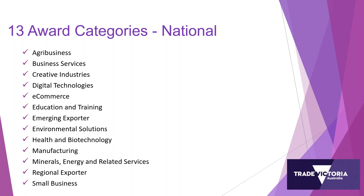If you are in a sectoral category such as agribusiness or education and training, you may also want to consider one of the crosscut categories like e-commerce, regional exporter, small business, and emerging exporter. Regional exporter is applicable if you're not based in metropolitan Melbourne. Small business applies if you have a turnover of less than $5 million annually. E-commerce, obviously, if you do most of your trading online. And emerging exporter if you have been exporting for three years or fewer.